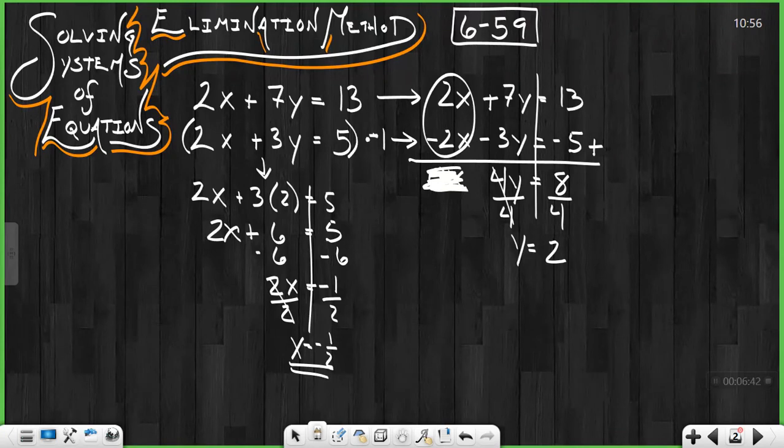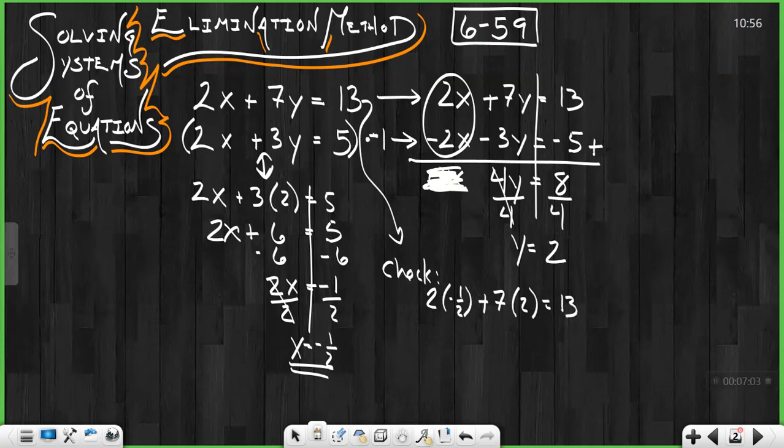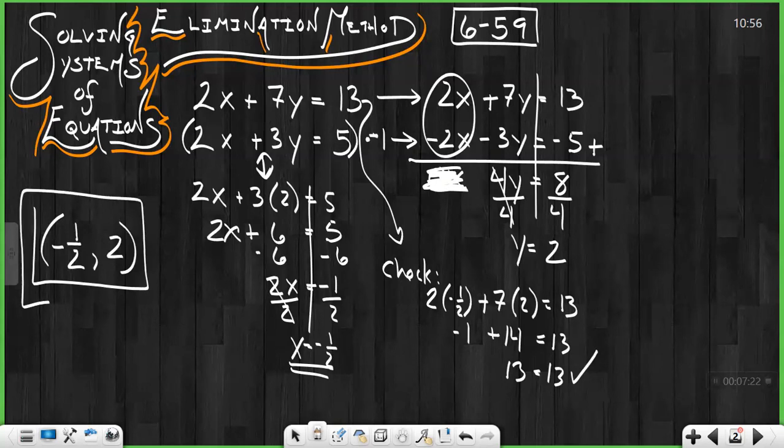I want to check it to make sure that it's right. I'll do my check down here. And if I used this equation right here to solve for x, I want to use the other equation down here to check it. Always use both equations. So to check it, I'm going to go 2 times negative 1 half plus 7 times 2 equals 13. And I find 2 times negative 1 half is negative 1. 7 times 2 is positive 14. And if I combine those, I get positive 13 equals positive 13. Shows my answer is correct. And I can write it always x first, negative half comma y. And that is my intersection point for these two lines. That's the solution to the systems of equations.